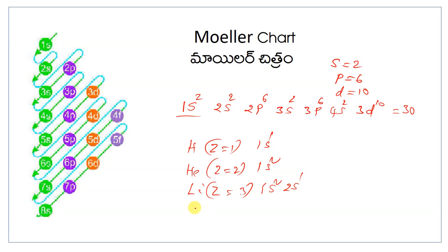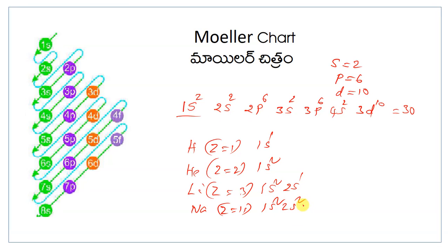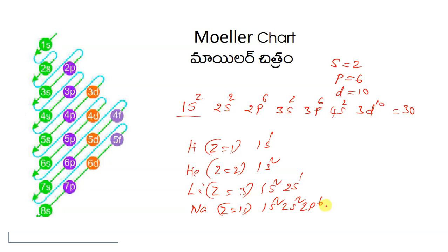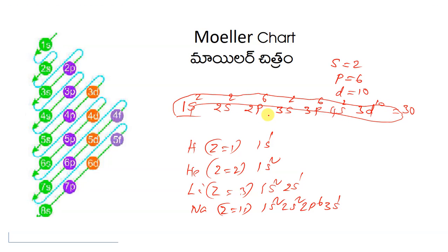And suppose sodium. Yes, sodium Z is equal to 11. Now write 11. 1s2, 2s2, 2p6. 2 is 2, 2 is 4, plus 6 is 10. Next what comes? 3s. 3s1 only. Don't write 2. Why? Next one, magnesium, has 3s2. Like that you can write.